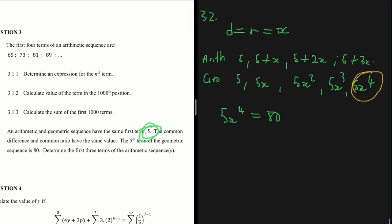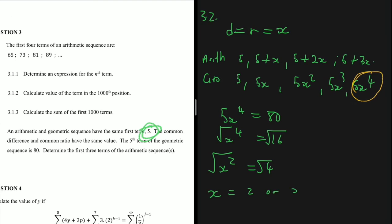Dividing both sides by 5 gives x⁴ = 16. Taking square roots: x² = 4. Taking square roots again: x = 2 or x = -2.